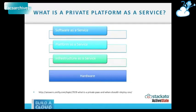PaaS deploys all of that, instantiates it, connects it to the application, and configures it — hopefully in a secure manner — allowing the application itself to be elastic, taking elastic computing one step further up the stack. Software as a service covers everything from Facebook to Salesforce. Private platform as a service is a PaaS deployed on infrastructure either within your own firewall or on a hosted private cloud service provider.